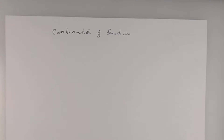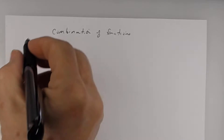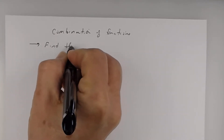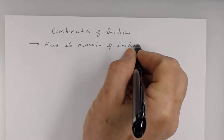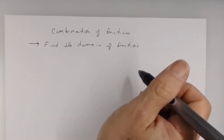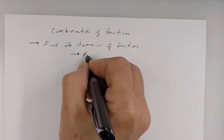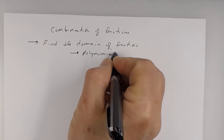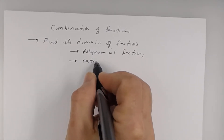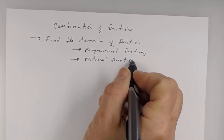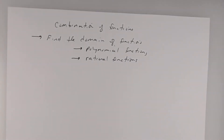We're talking about combination of functions, section 2.6 of your book. First of all, we need to talk about finding the domain of functions. The two types of functions we're going to concentrate on are polynomial functions and rational functions.